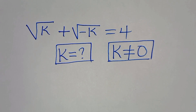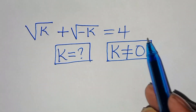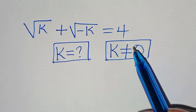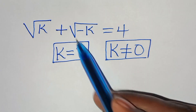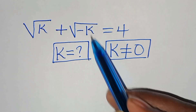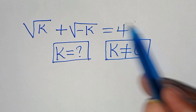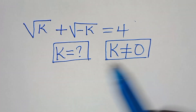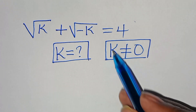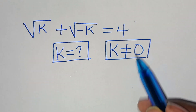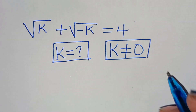Hello everyone, you are welcome to solve this nice algebra problem: the square root of k plus the square root of minus k equals 4. What is the value of k, given that k is not equal to 0?